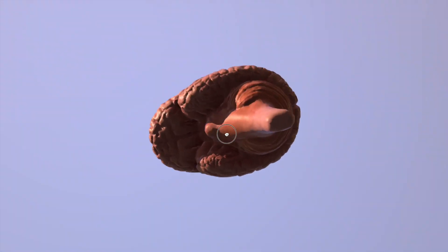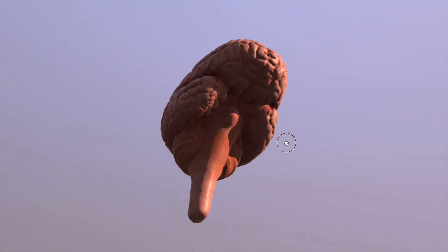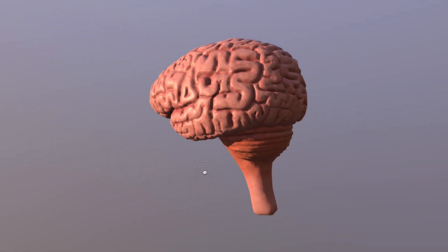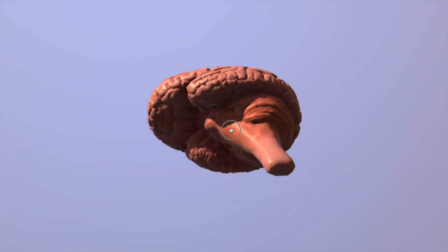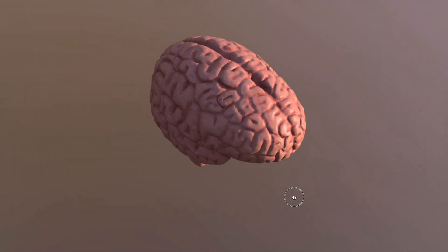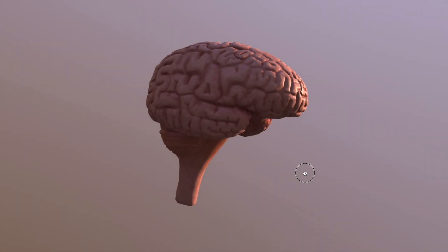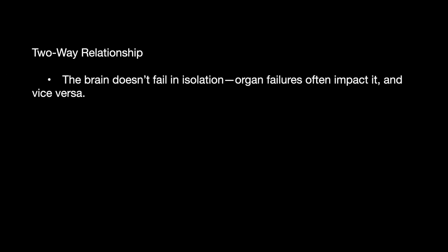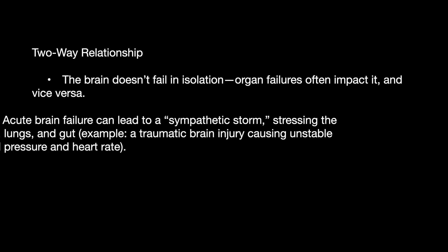A patient with severe kidney disease — uremia — may become confused or drowsy due to toxin buildup affecting the brain. It's a two-way relationship: the brain doesn't fail in isolation. Organ failures often impact the brain, and vice versa — a stroke of the brain can affect other organs.